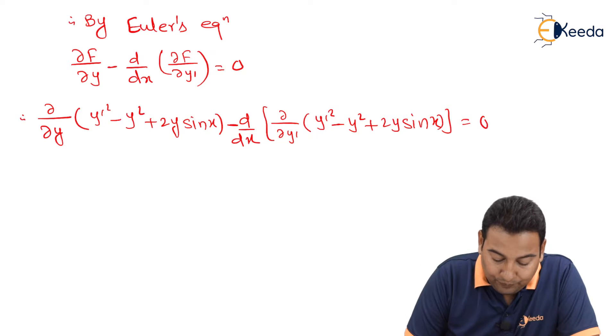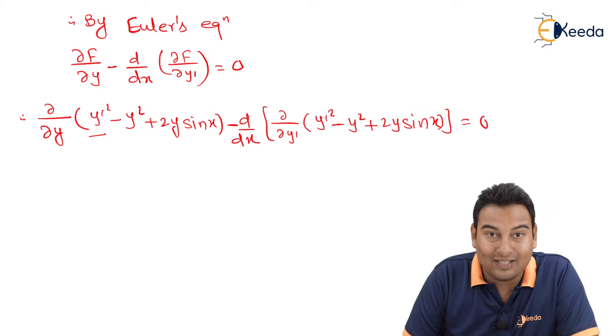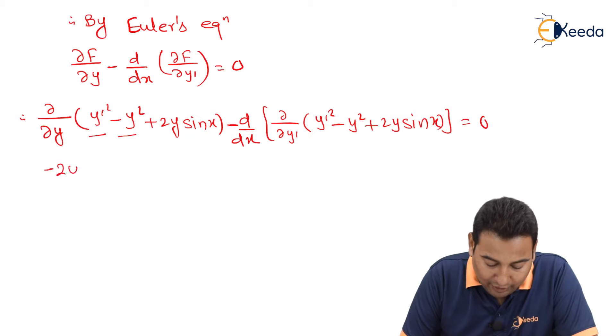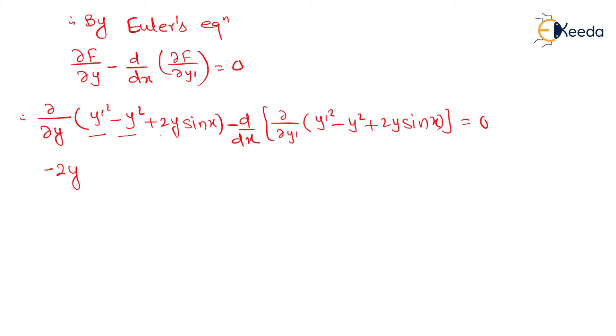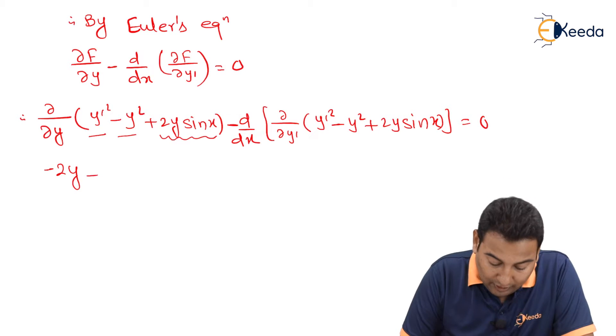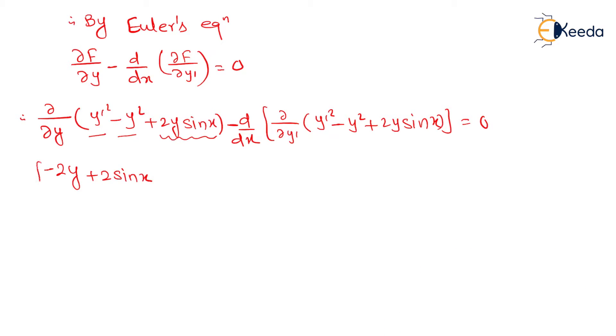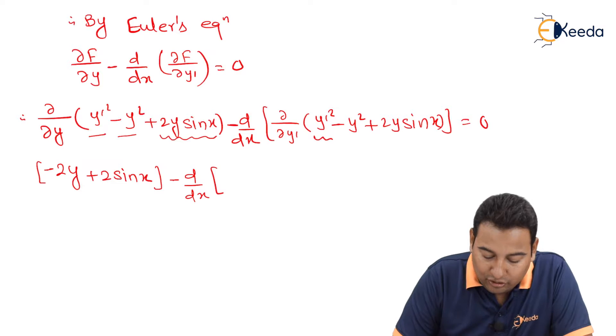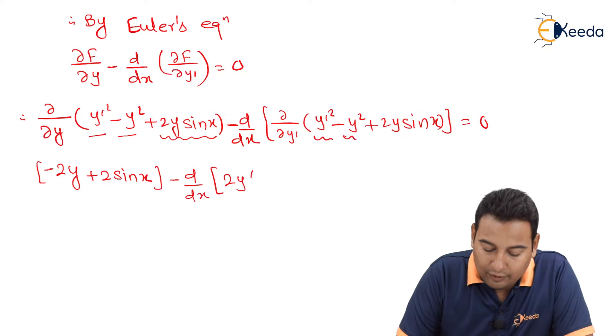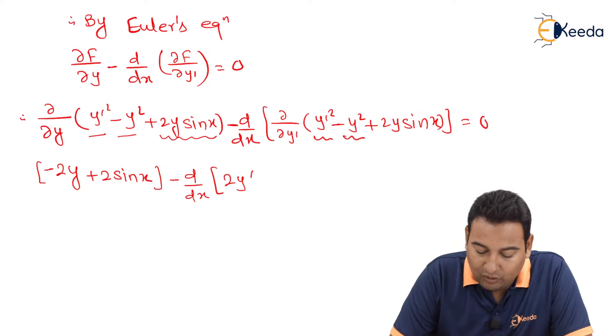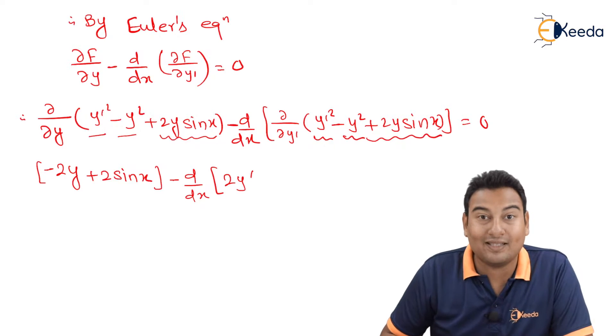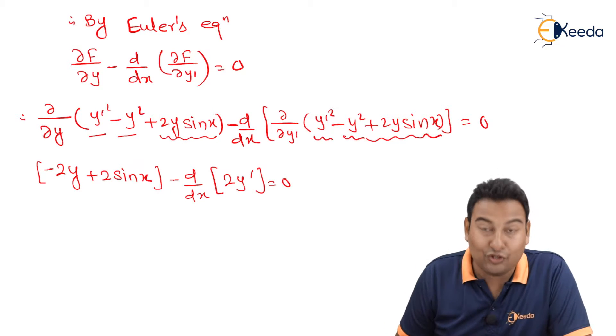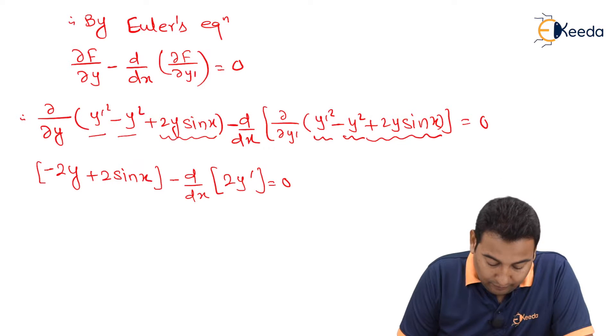Let's differentiate. With respect to y, this is 0 constant. Minus y square is minus 2y. This differentiation with respect to y, here 2 sin x is constant. And with respect to y, derivative is 1. Minus d/dx of, with respect to y dash, this is 2y dash, this is 0. And with respect to y dash, this is also 0 because the entire term is constant, which is equal to 0.